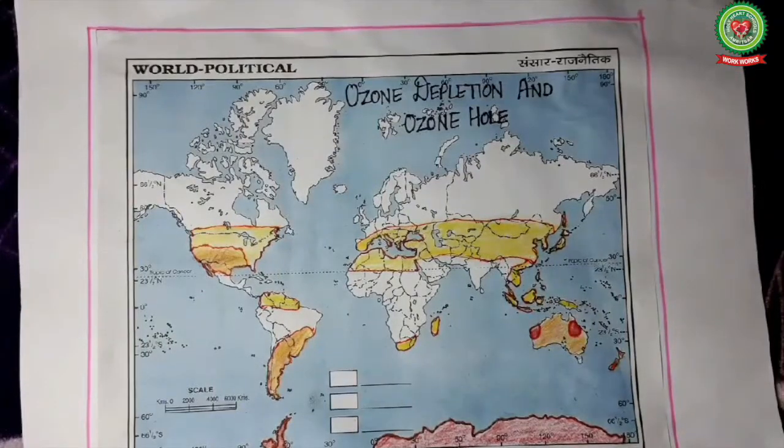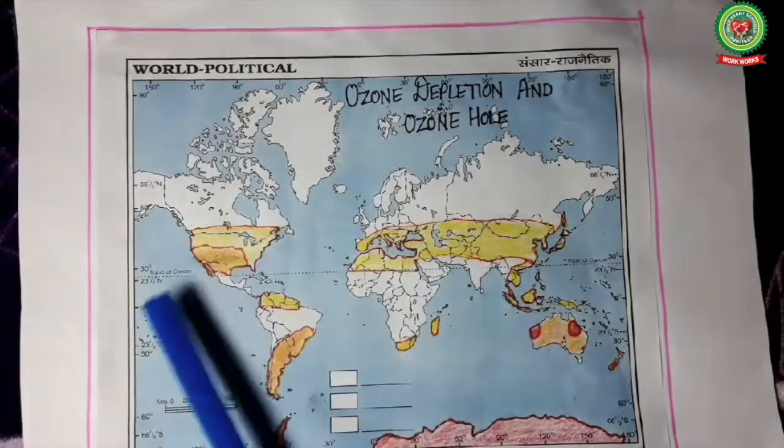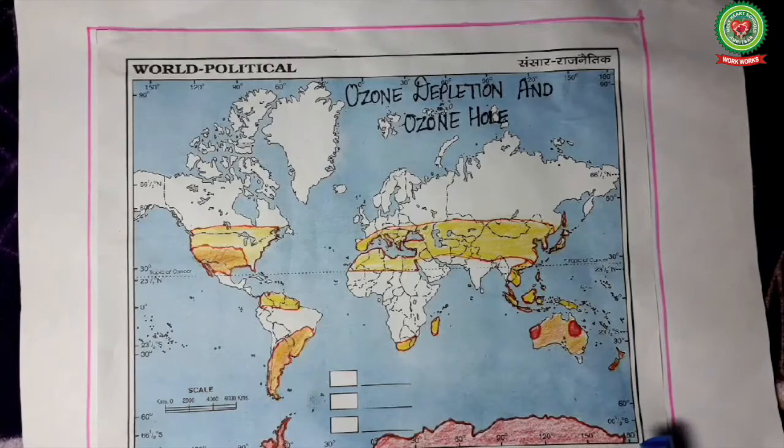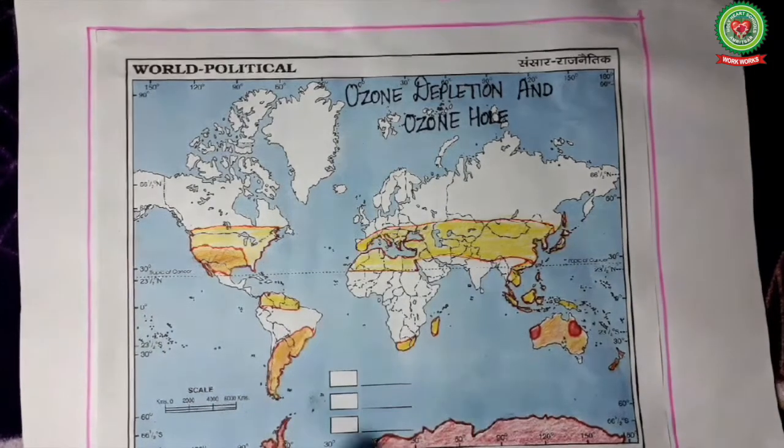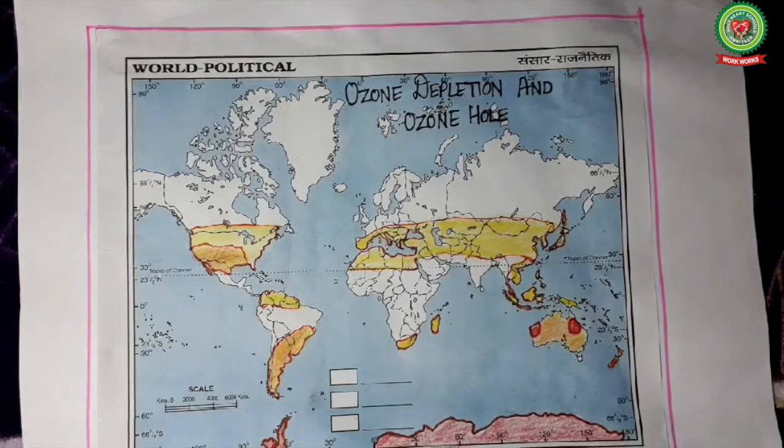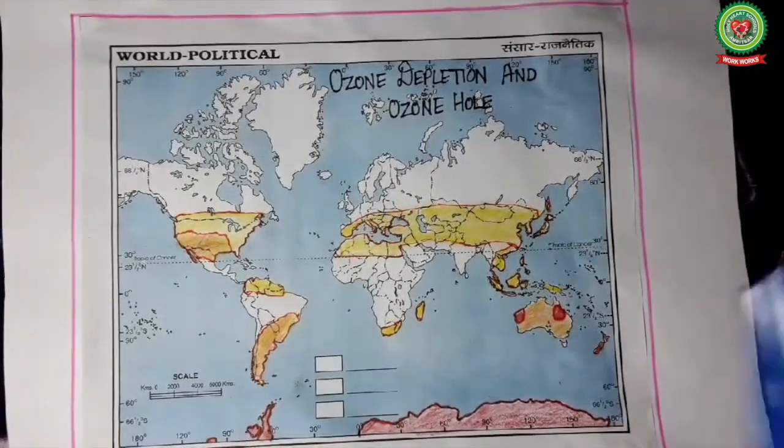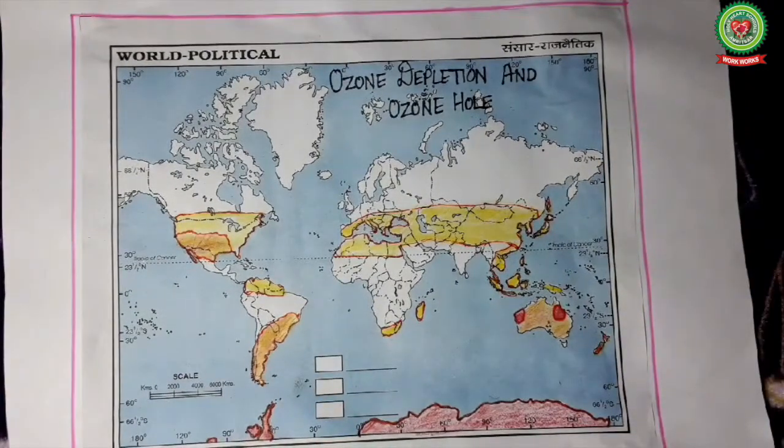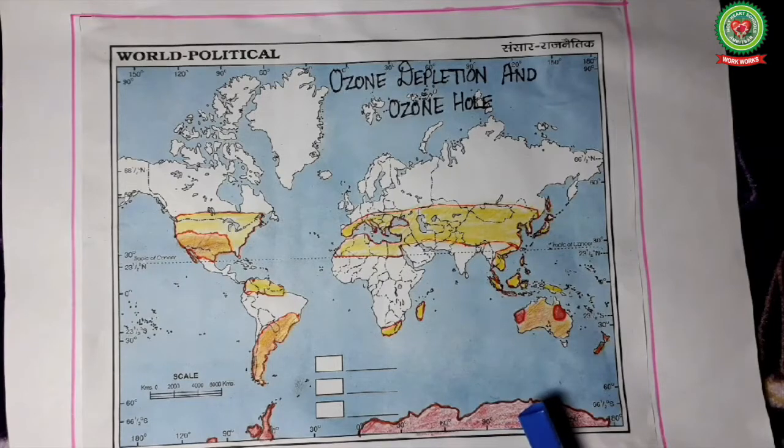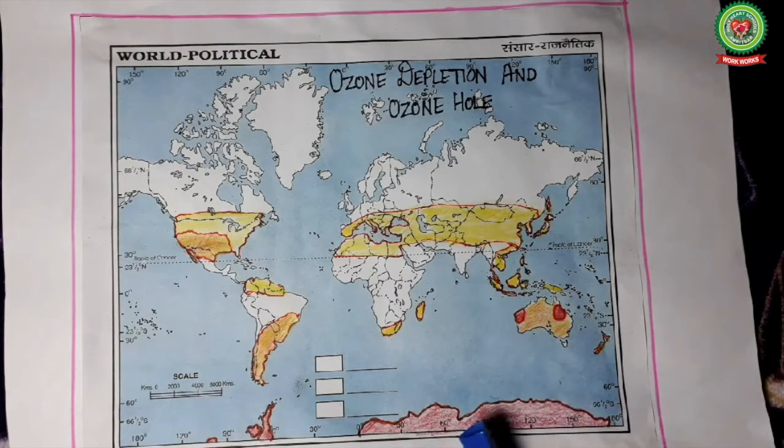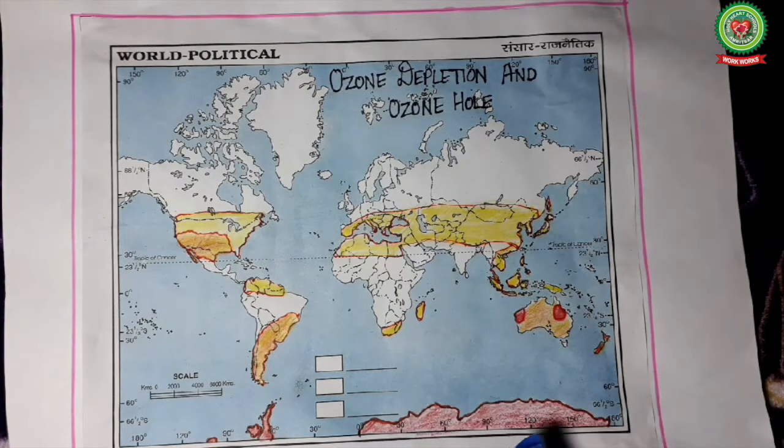In this map we can see large part of the world is under the threat of ozone depletion, ozone hole. The largest ozone hole was discovered in Antarctica in September 2000 by NASA. The ozone hole in Antarctica was 3 times larger than the entire landmass of United States.